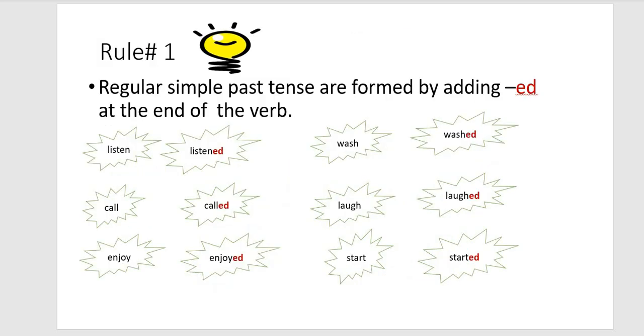Let's look at the rules for making the verbs from present tense into simple past tense. Regular simple past tense is formed by adding ed at the end of the verb.